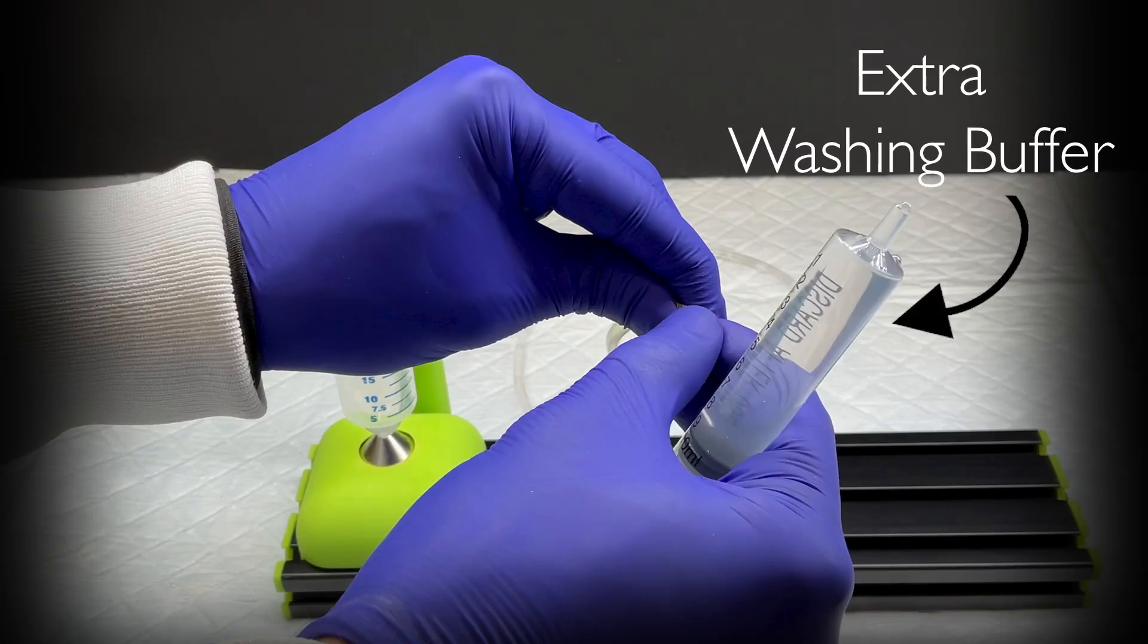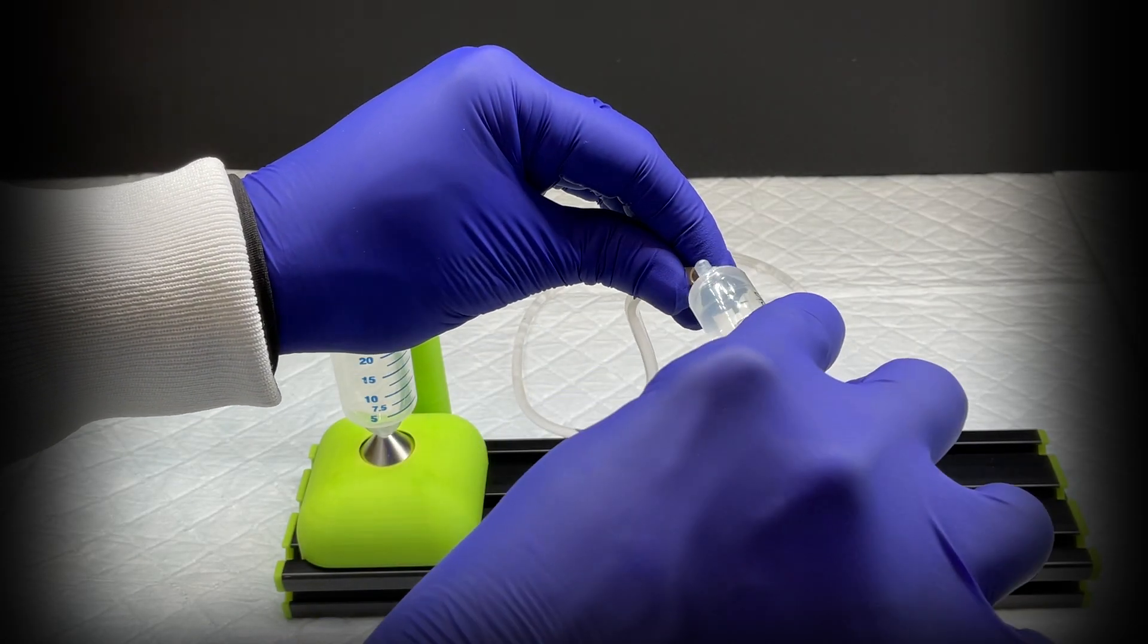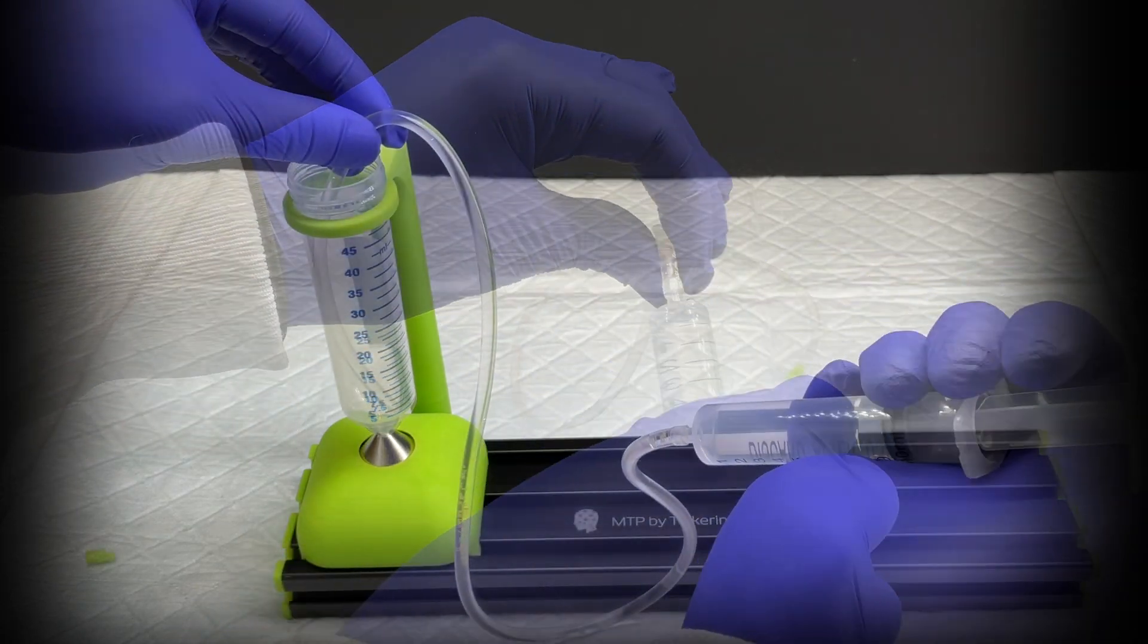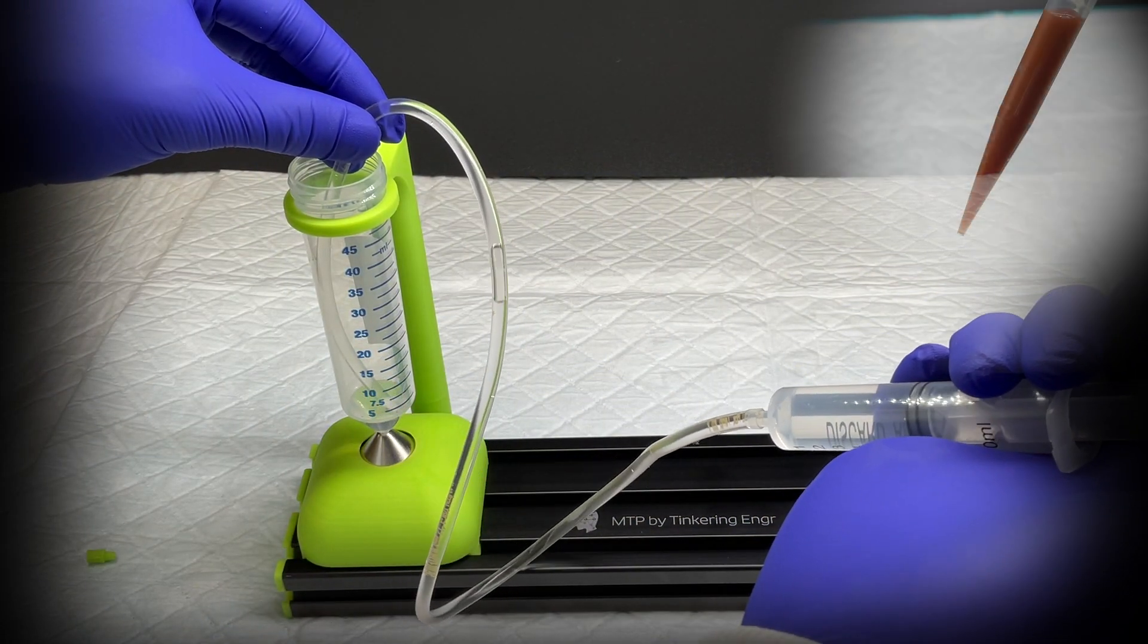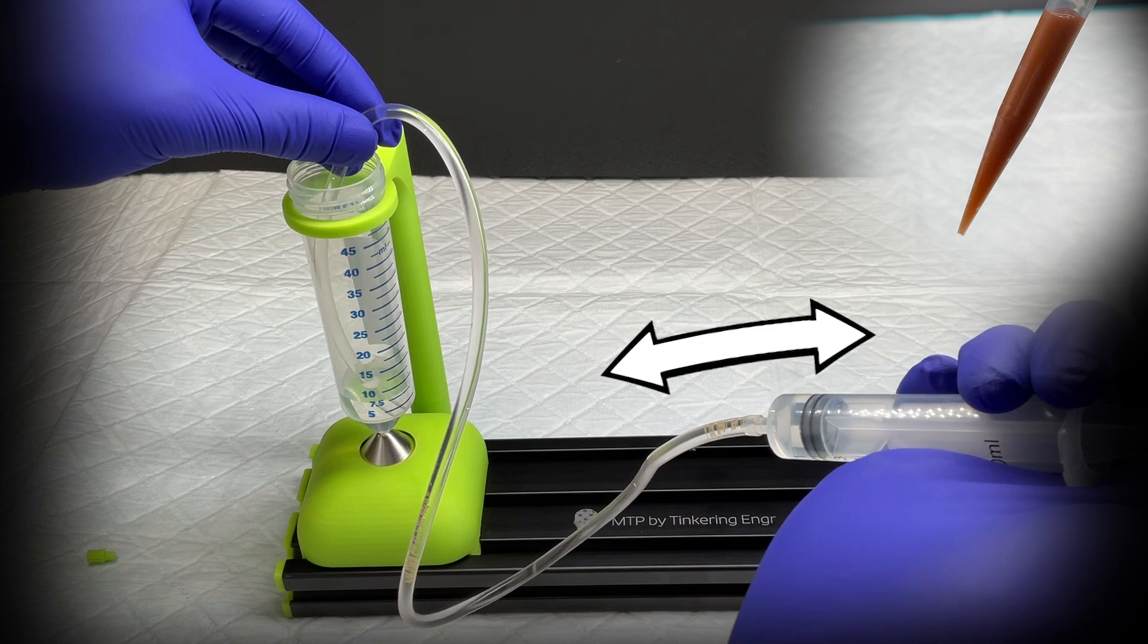I take about 10 milliliters of extra washing buffer to purge the tubing into a conical tube resting above the cone magnet. If a large amount of resin is used, you may need to cycle the purge once or twice to remove all the resin in the tubing.